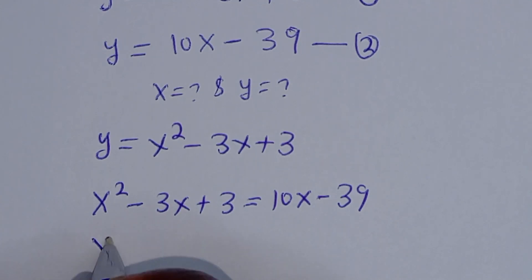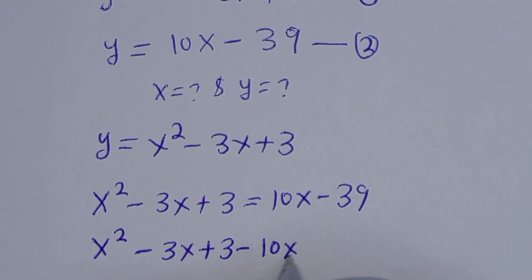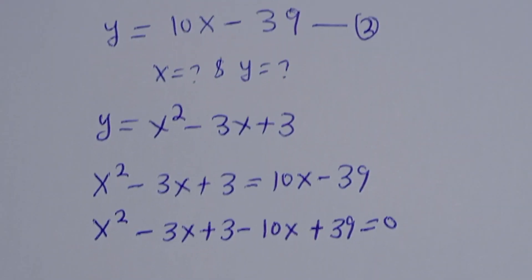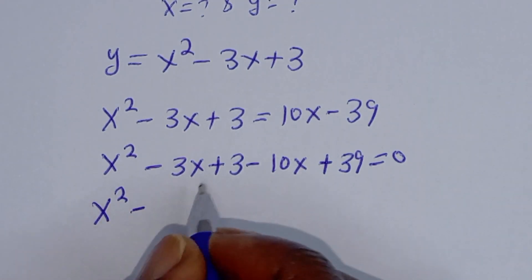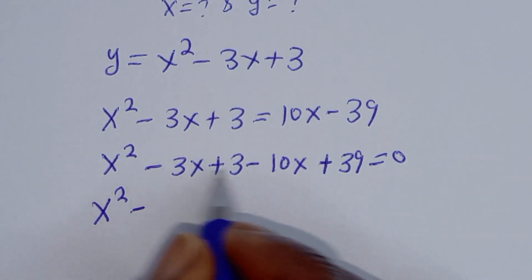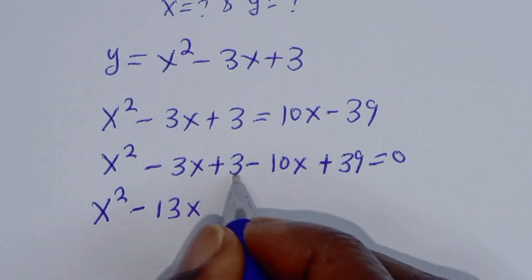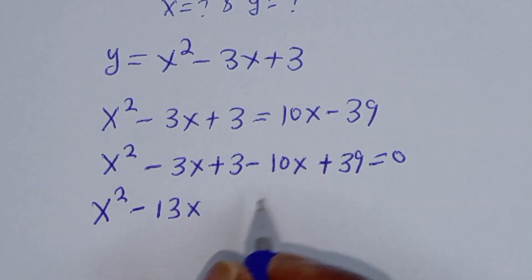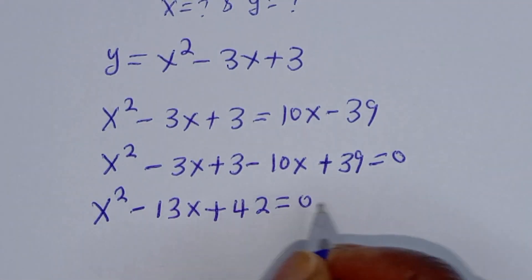Now we have S squared minus 3S plus 3 minus 10S plus 39 is equal to 0. This simplifies to S squared minus 13S plus 42 is equal to 0.